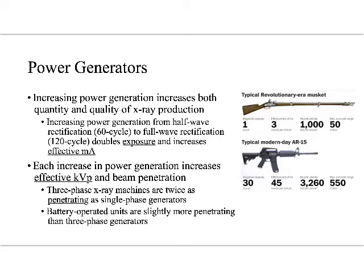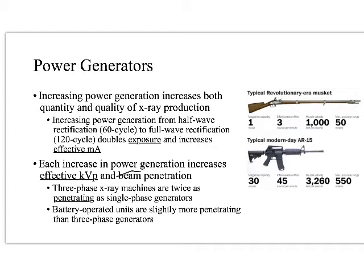The caliber is like KVP, the amount of buckshot is like our MAs, and changing the generator changes how quickly we can move through both of those. Increasing power generation increases both the quantity and quality of x-ray production. Moving from half-wave rectification at 60 cycles per second to full-wave rectification at 120 cycles per second doubles the exposure and increases the effect of MAs.